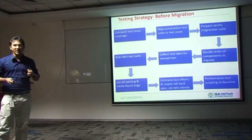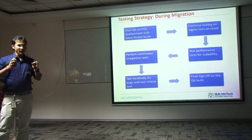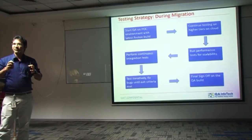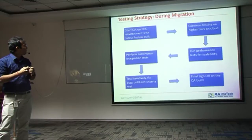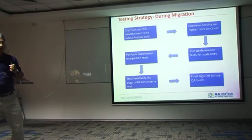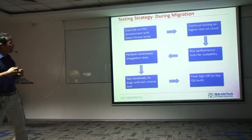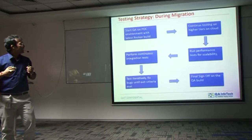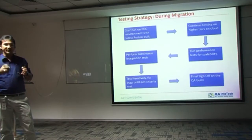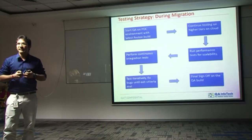We perform a set of performance tests to baseline the application performance before migration and then compare it after migration is done. During the migration phase, we take the most stable build on the REST environment — the build on the physical servers — and deploy it on the POC environment on cloud. The POC environment starts minimal and we gradually increase the servers to higher tiers on the cloud, then kick off functional and performance testing on cloud.